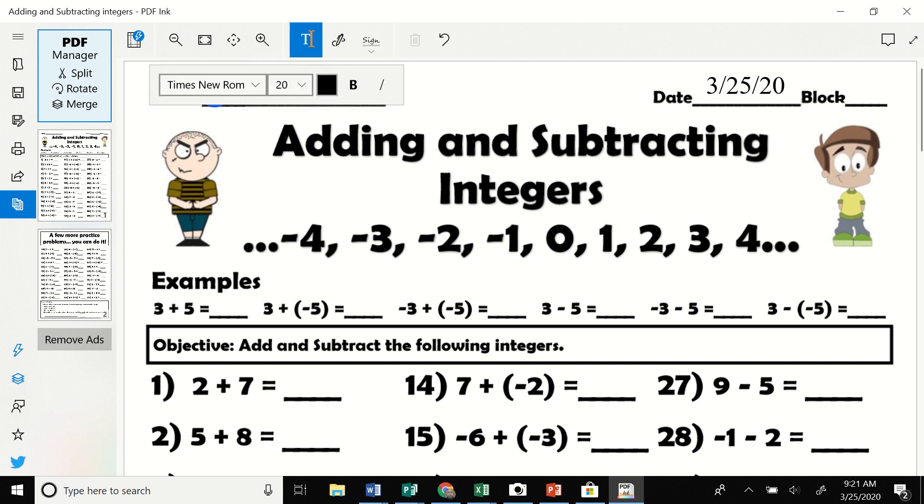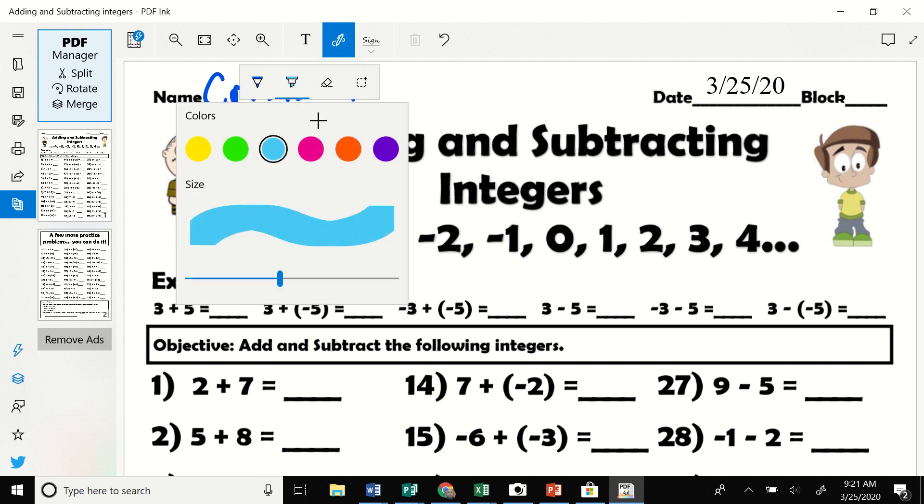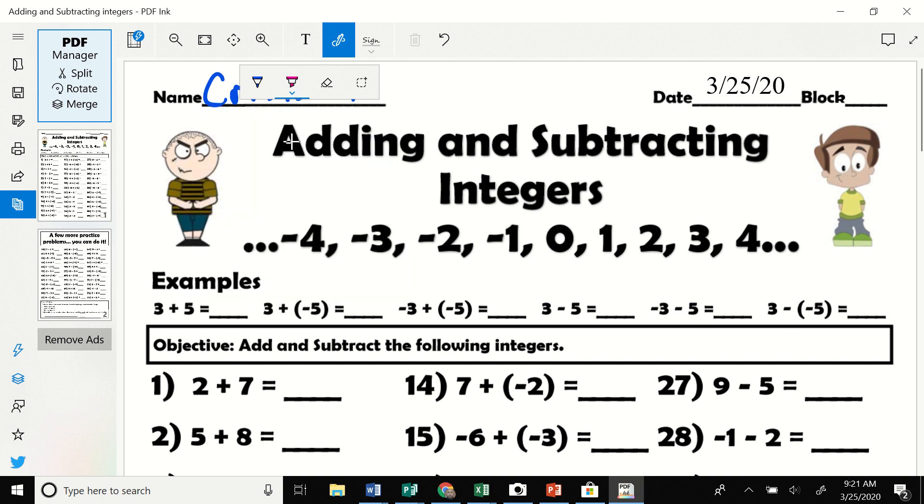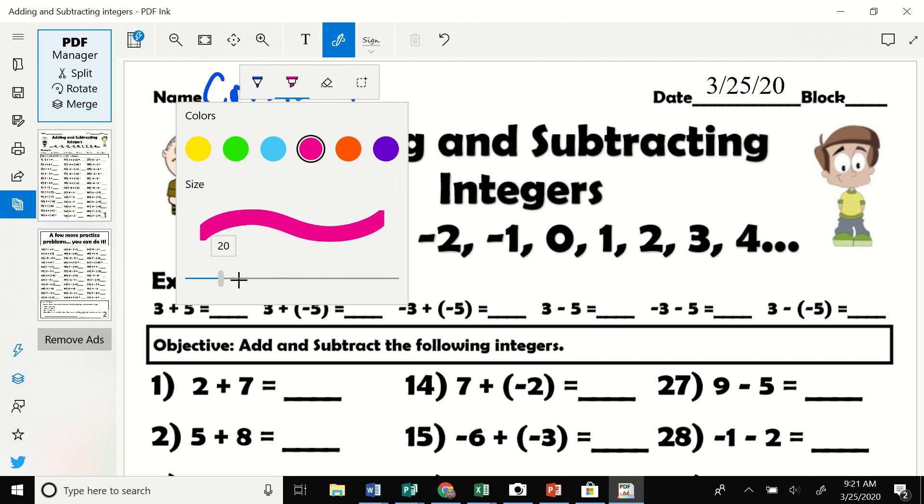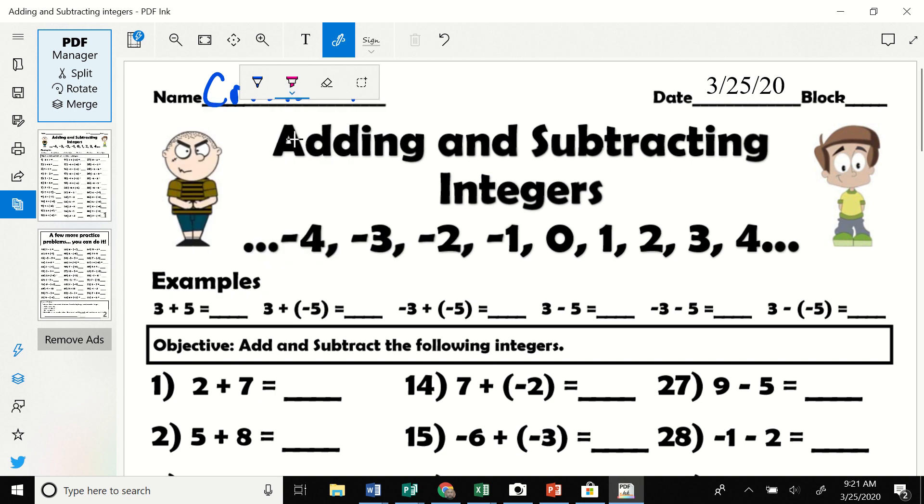It also gives you the option to highlight. If we go back to ink and draw, we have a highlighter tool right here. You click it again to open up the options. You have different colors here that we can use, and you can adjust the size down here. Let's say I want to highlight adding and subtracting.